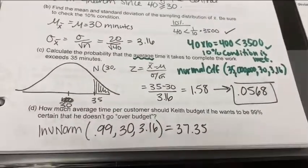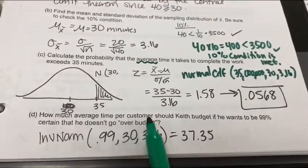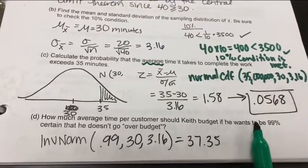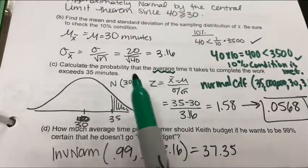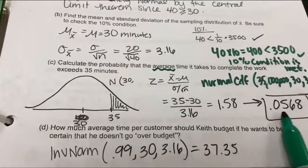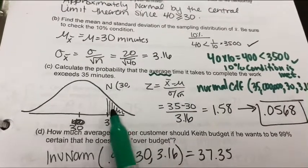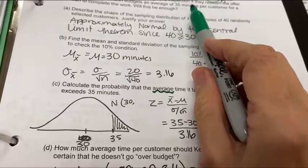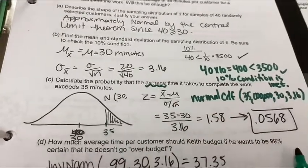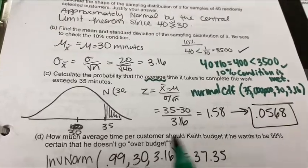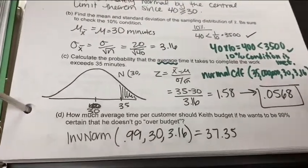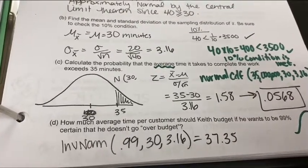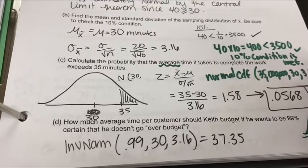Last part. What would be the average time per customer should Keith budget if he wants to be 99 percent certain? So it looks like only 5 percent or a little bit more than 5 percent of the time the appointments are going to last longer than 35. So what am I trying to figure out here?